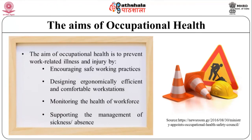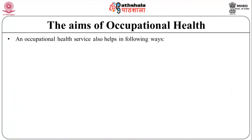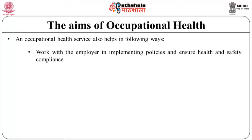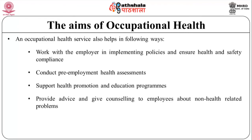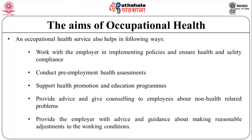Now let's discuss the aims of occupational health. The aim of occupational health is to prevent work-related illness and injury by encouraging safe working practices, designing ergonomically efficient and comfortable workstations, monitoring the health of the workforce, and supporting the management of sickness or absence. Occupational health also helps in working with the employer to implement policies and ensure health and safety compliance, conducting pre-employment health assessments, supporting health promotion and education programs, and providing advice and counseling to employees about health-related problems.